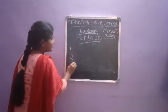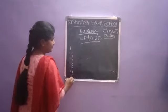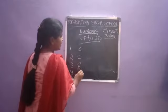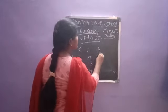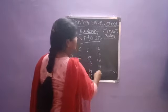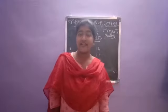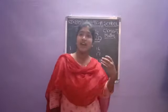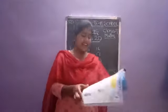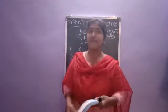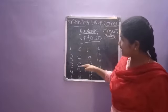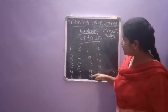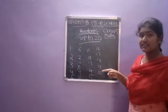Start writing. 1, 2, 3, 4, 5, 6, 7, 8, 9, 10, 11, 12, 13, 14 — read and write — 15, 16, 17, 18, 19, and 20. We have already completed the writing. We are reading the numbers up to 20 and we also write the numbers up to 20. This is very easy.